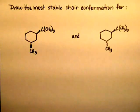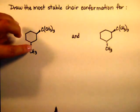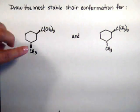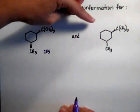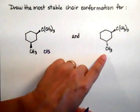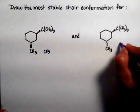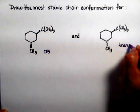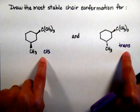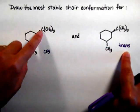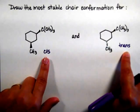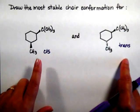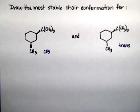Another example of finding the most stable chair. This one has two substituents on the same side — that one is the cis isomer. This one has one substituent in the front and the other in the back — that one is the trans. The limitation here is that whenever I have two substituents, for cis they have to be on the same side of the molecule, and for trans they have to be on the opposite side.